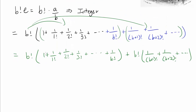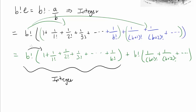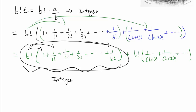Now we should see that the first part is entirely an integer, because B factorial times 1 is an integer, B factorial over 1 factorial is an integer, all the way to B factorial over B factorial — all of these are integers. You're adding a bunch of integers, so this entire first part is going to be an integer.